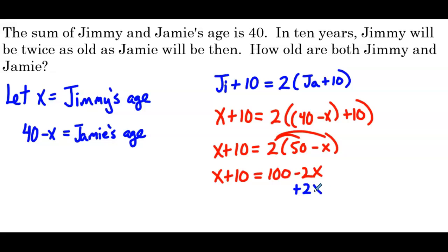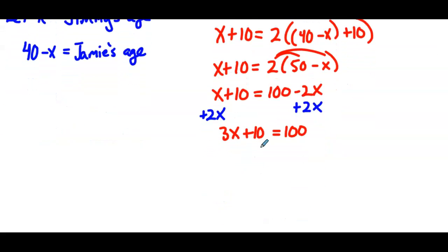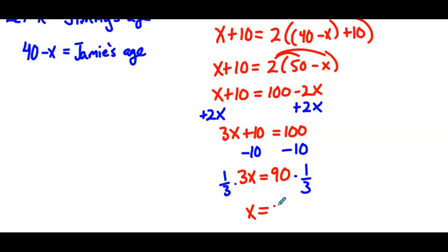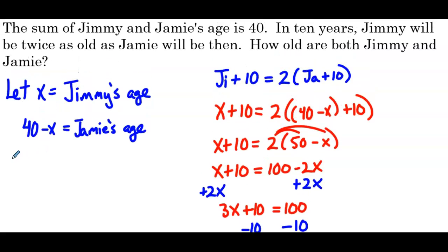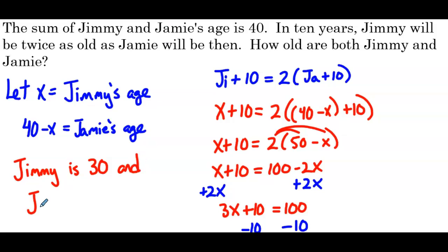Adding 2x to both sides gives 3x plus 10 equals 100. Subtract 10 from both sides: 3x equals 90. Multiply both sides by one third and we get x equals 30. So Jimmy is 30 years old, and Jamie is 40 minus 30, which is 10.